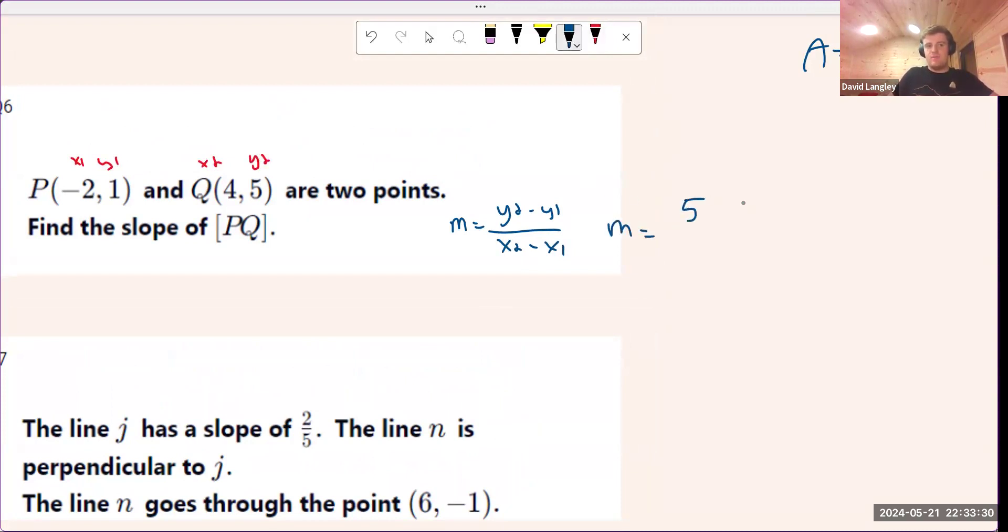We're going to get m equals 5 minus 1 over 4, and then minus minus 2, that will become plus 2. And so then we'll have 4 over 6, which is 2 over 3. And so your slope there is going to be 2 over 3.